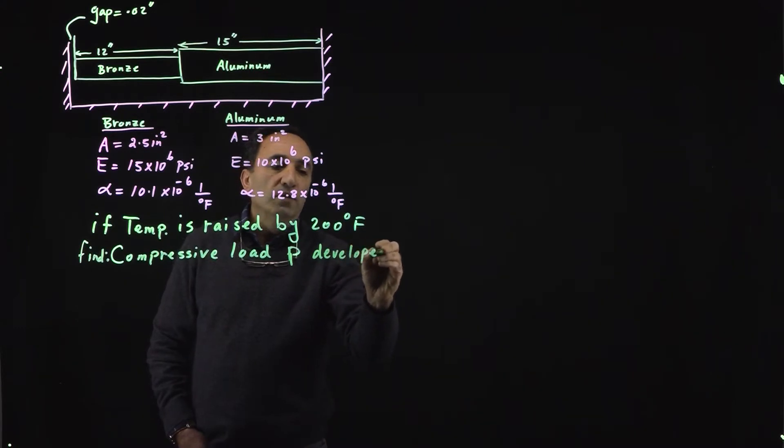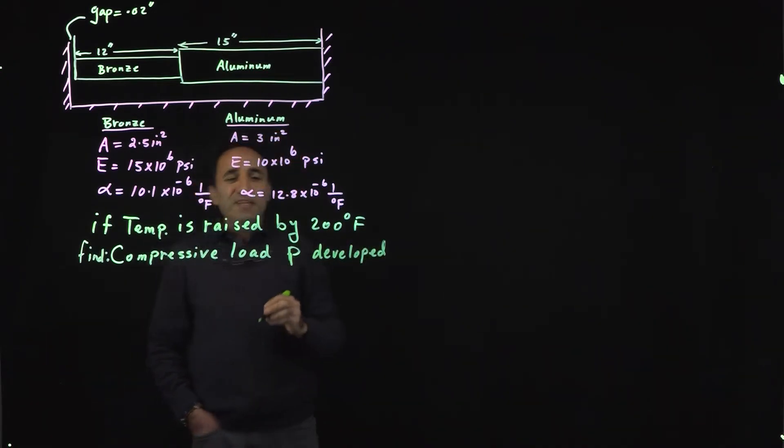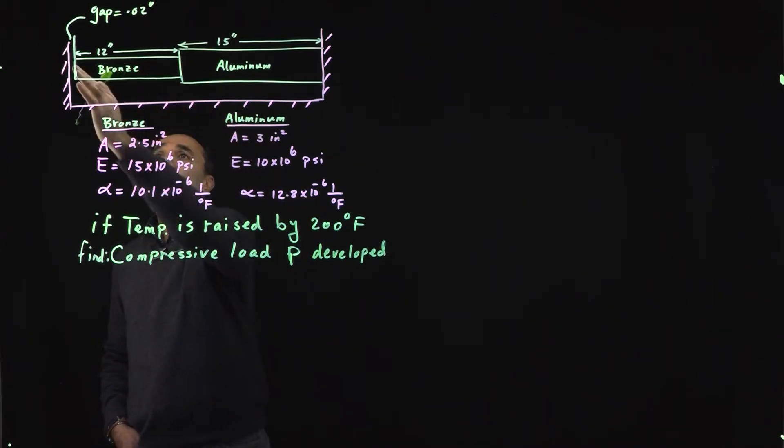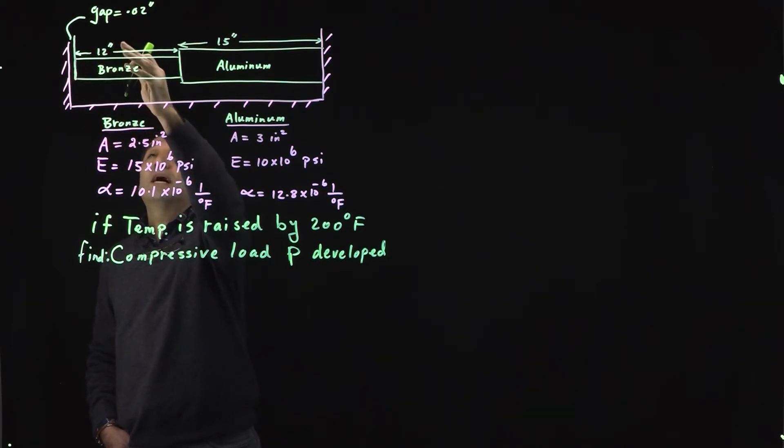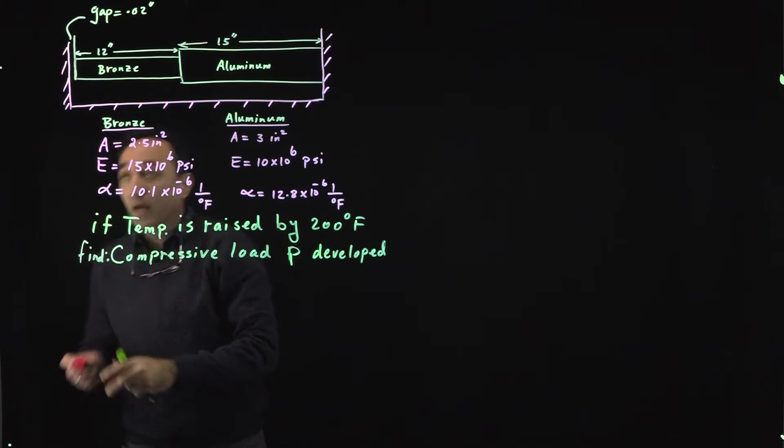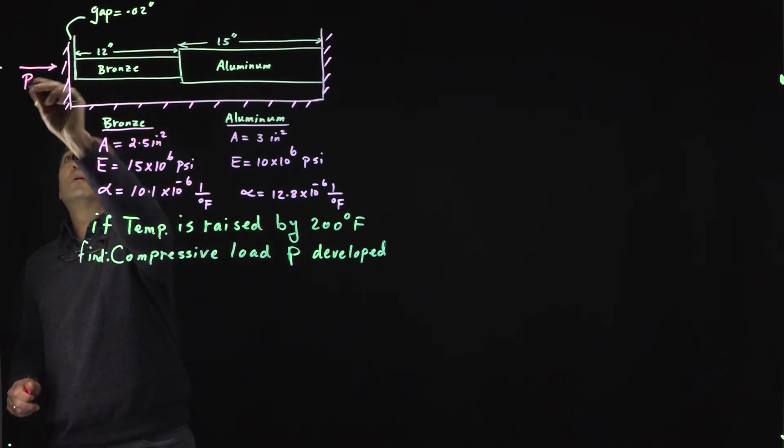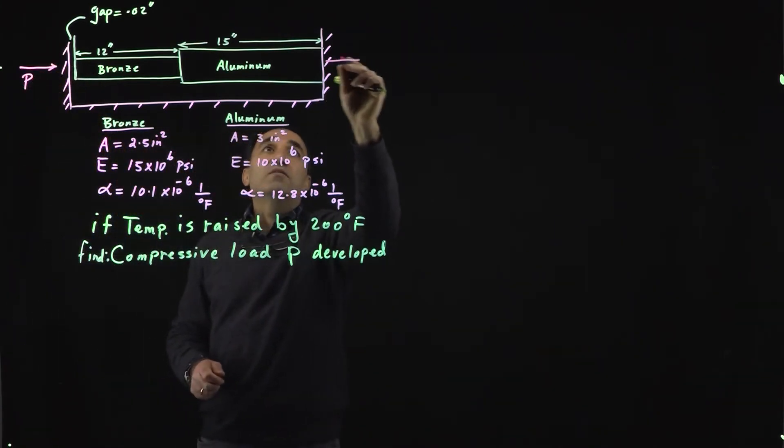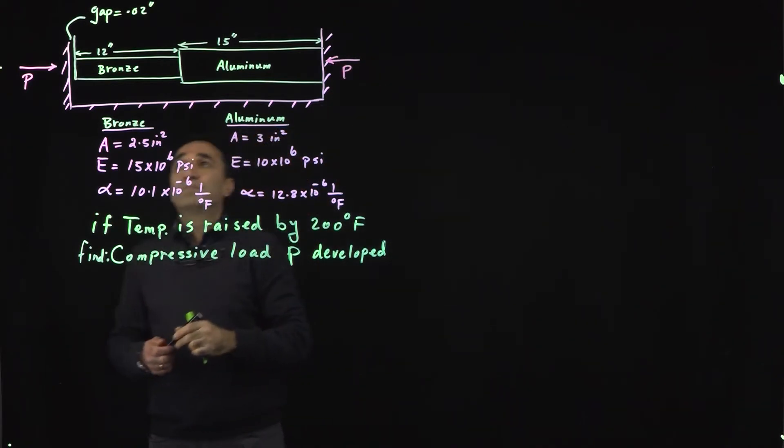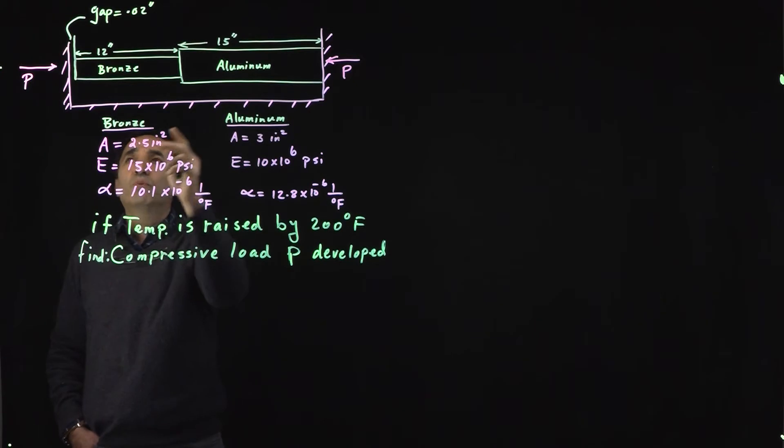What we are indicating here is that when the temperature increases that much, the bronze and aluminum are going to expand. They're going to hit the wall, go beyond the gap and hit the wall. As a result of that we'll have a compressive load developed, which would be exactly the same one on this side. Let's get started by seeing what would be the temperature effect in the expansion of these two bars.